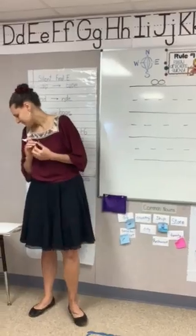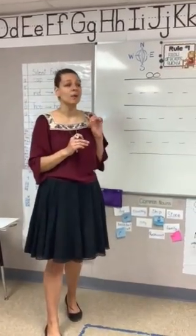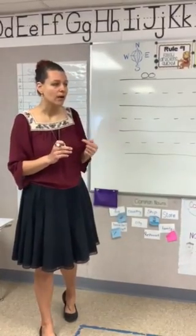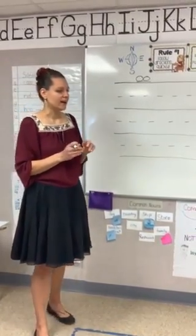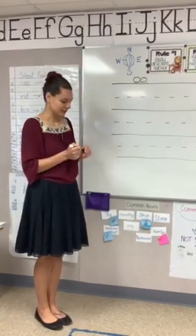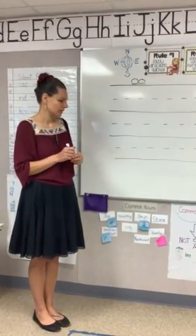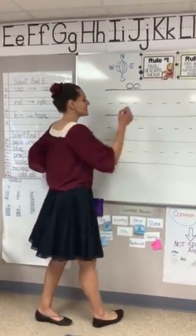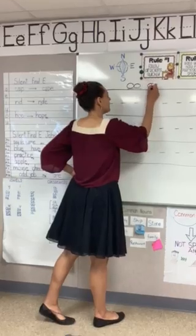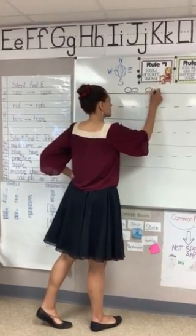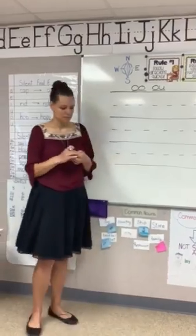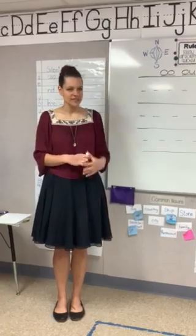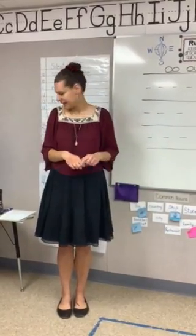Alright, our next phonogram is OO. What are you going to write? Good. OO. Now say it while you write it. Alright, this is our OO. These are the only two-letter phonograms we have in our words today, so let's just jump on in.